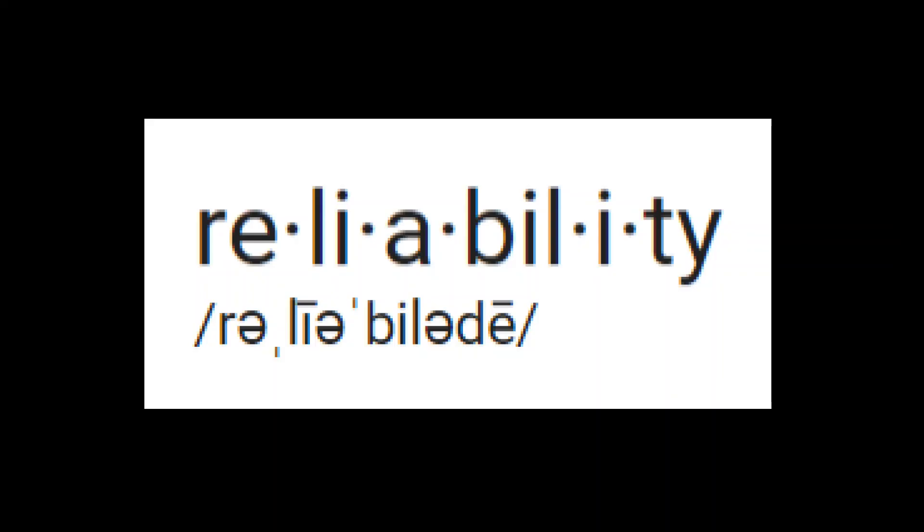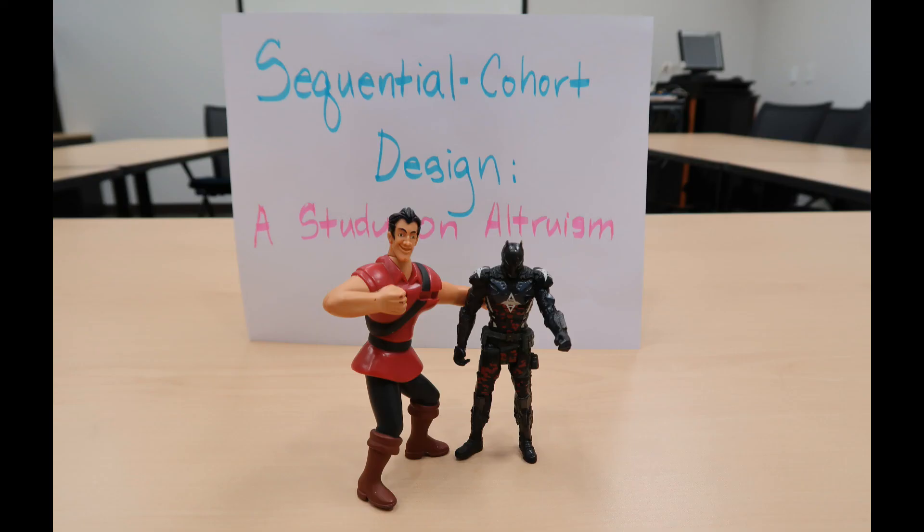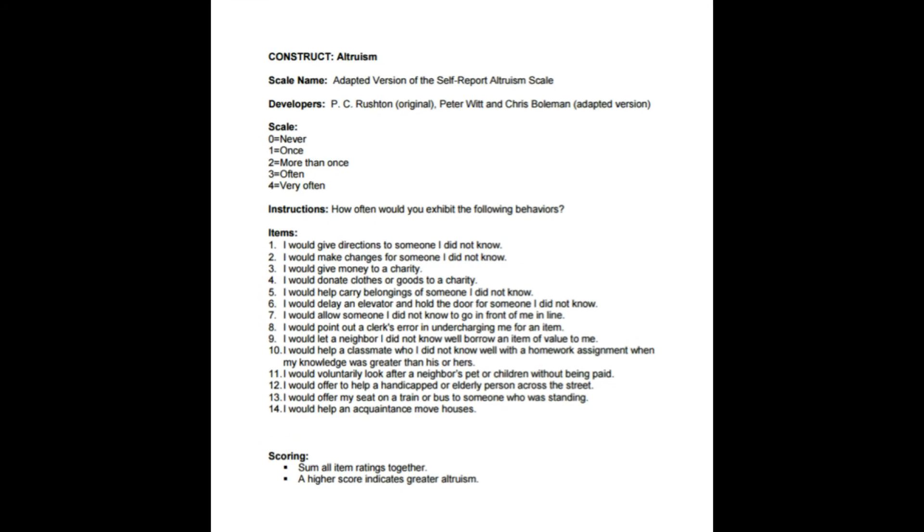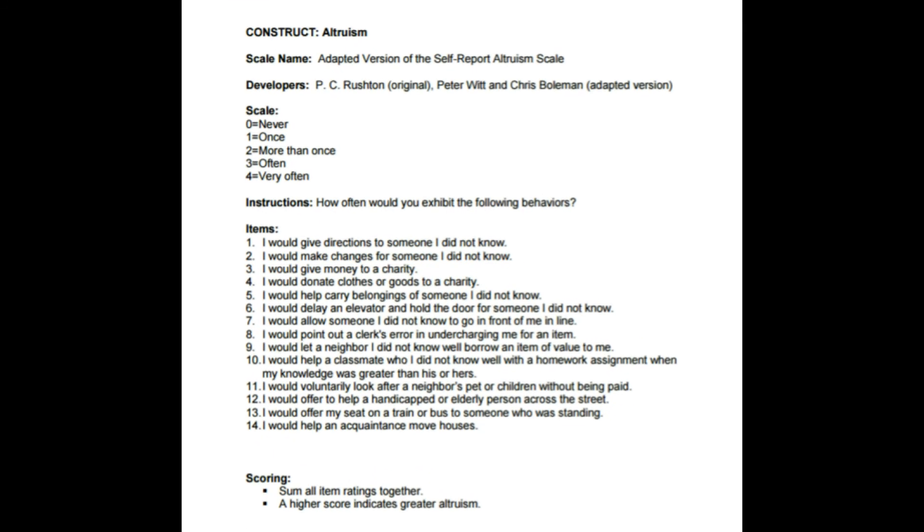There are also general threats to reliability that have been reduced through the following measures: the inclusion of two researchers conducting this study, the testing of participants in the same environment each time, and once again, the use of a scientifically validated questionnaire created specifically to measure the characteristics of altruism in a younger population.